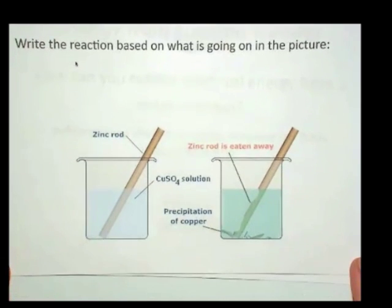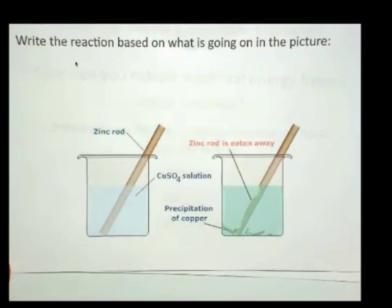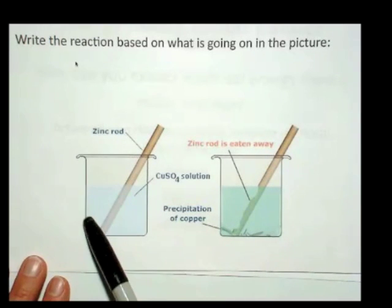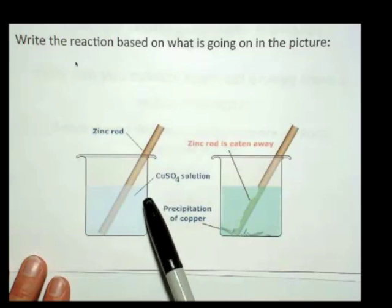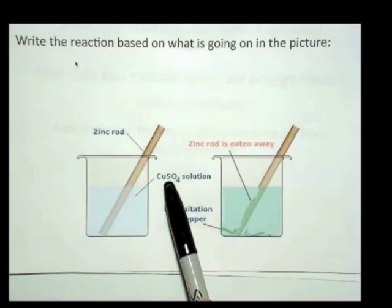I want you to look at this picture, these two pictures, and we're going to write a reaction based on what's going on in the picture so we can understand what this idea of spontaneous electron transfer means. In this case, if you have a beaker and you have in the beaker a solution of copper-2-sulfate, a copper-2-sulfate solution. Copper-2-sulfate, as you know, is ionic.